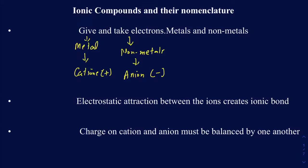Once you have the cations and the anions made, according to electrostatic attractions, we will have a positive and negative attracting one another, and that's going to be the foundation of the formation of an ionic bond. Once you have this positive and negative attracting one another, that creates the ionic bond.